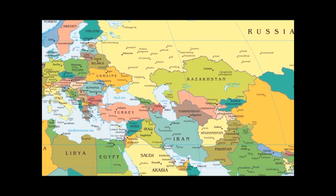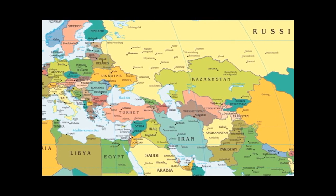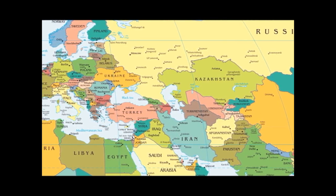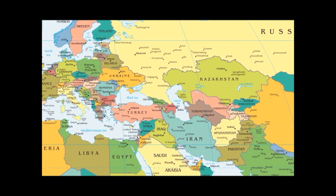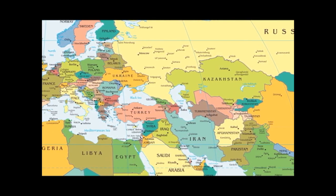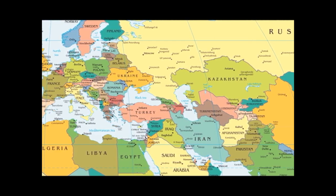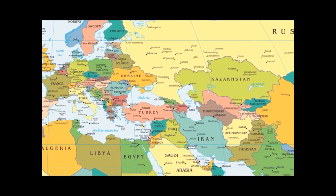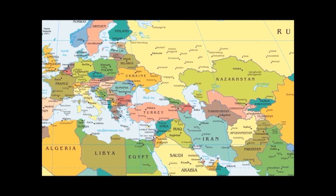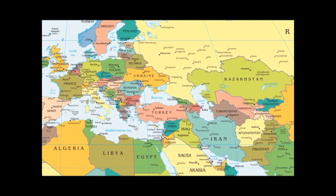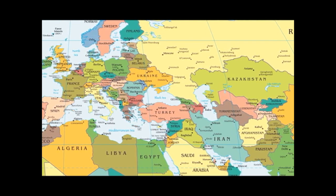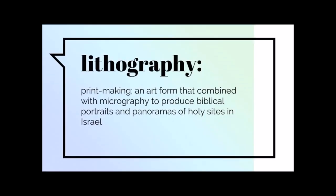This art form gained popularity when it spread throughout Europe in the early 13th century. Bibles produced in France and Germany featured elaborate ornamental panels that introduced the individual books of the Bible. Micrography declined in the 16th century due to criticism by a rabbi who complained that the designs made the text hard to read. Micrography made a comeback in 1798 with the invention of lithography, a form of printmaking, and prints of biblical portraits and panoramas of holy sites were mass-produced and distributed to a wide audience.